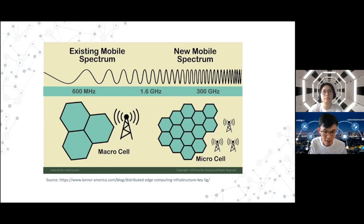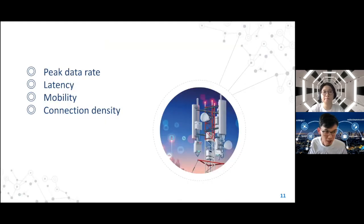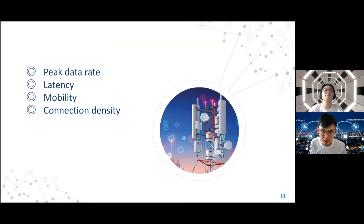The speed you get also depends on which spectrum band the operator runs 5G on and how much the carrier invests in antennas and transmitters. Moving on to the advantages of 5G — the first is the high data rate. 5G will offer significantly faster data speeds: peak download speeds can hit 20 Gbps and upload speeds 10 Gbps per mobile base station. Latency should be at least 4 milliseconds in ideal circumstances, and as low as 1 millisecond for use cases demanding utmost speed.